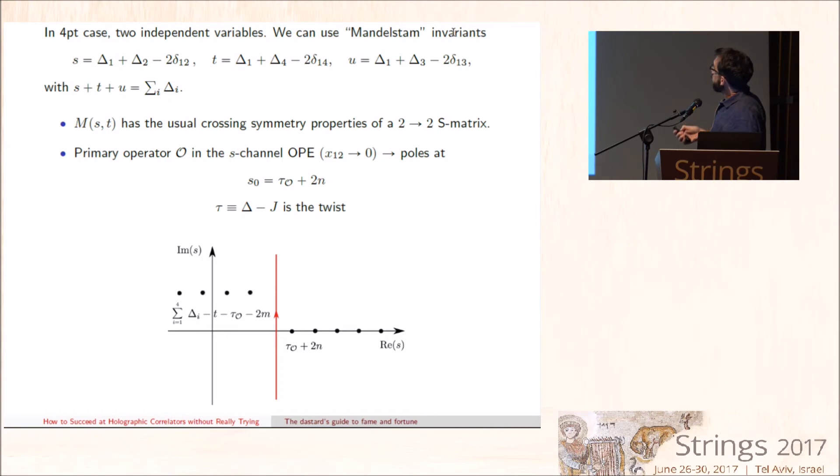In fact, there should be an infinite series of poles related to the descendants. And then this M has factorization properties somewhat analogous to a three-level scattering amplitude in flat space where the OPE tells you how the n-point function reduces to the n-1 point function. In the case of the four-point function, you should use s, t, and u variables, Mandelstam-like variables that sum to δᵢ, and the crossing symmetry properties are analogous to a 2→2 scattering process. Here is a sketch of the analytic structure that follows from a single operator exchanged in the one-two channel. There's an infinite tower of poles at the position of the twist of the exchange operator.